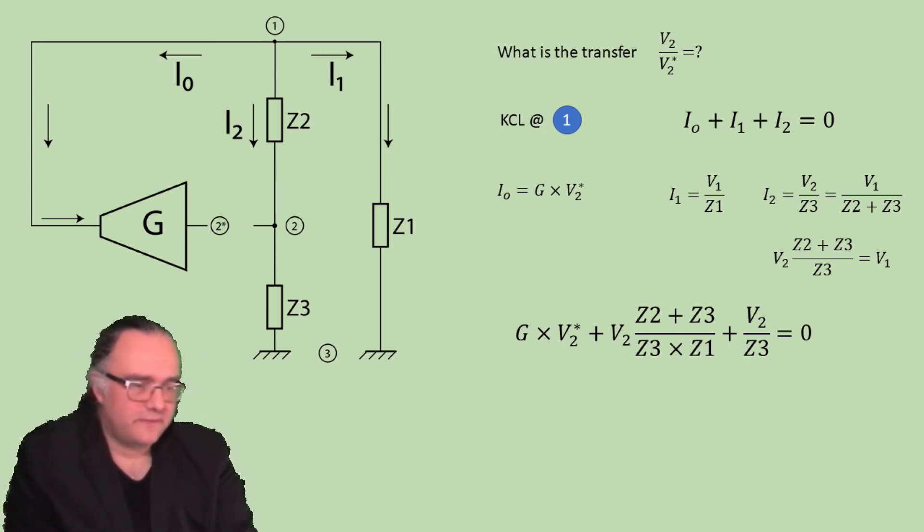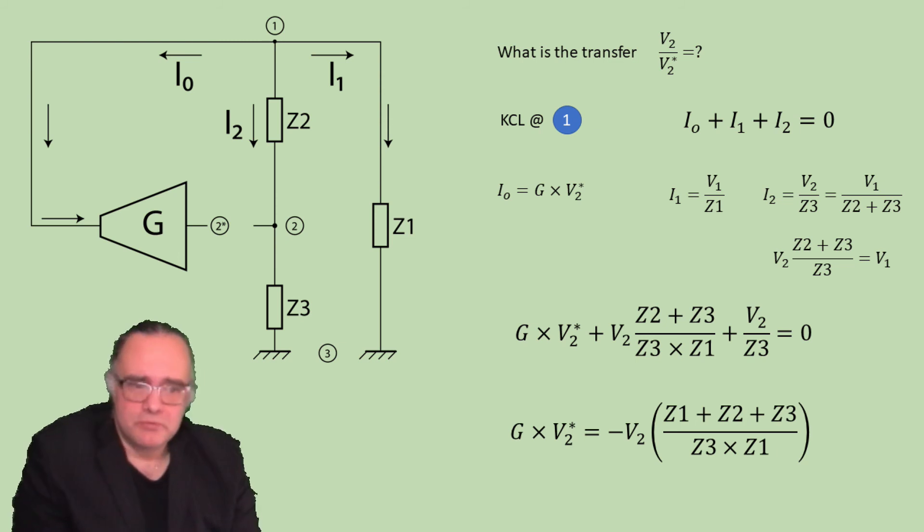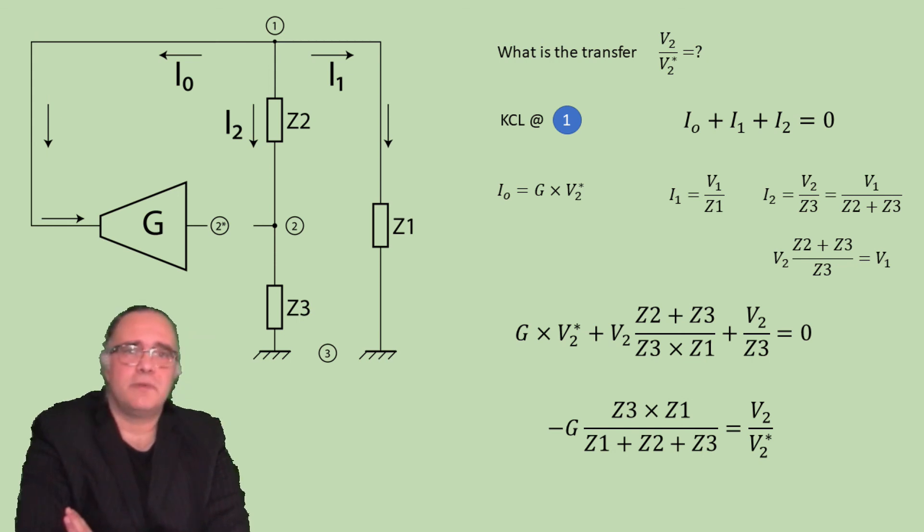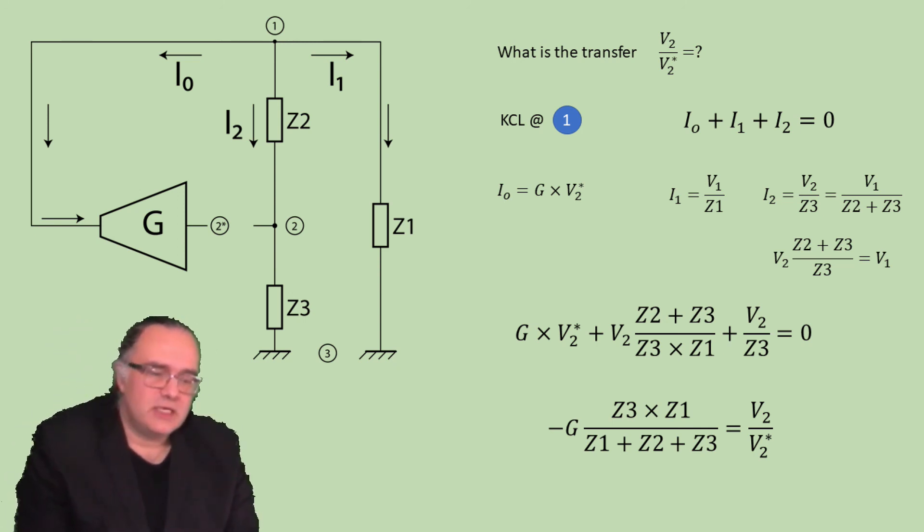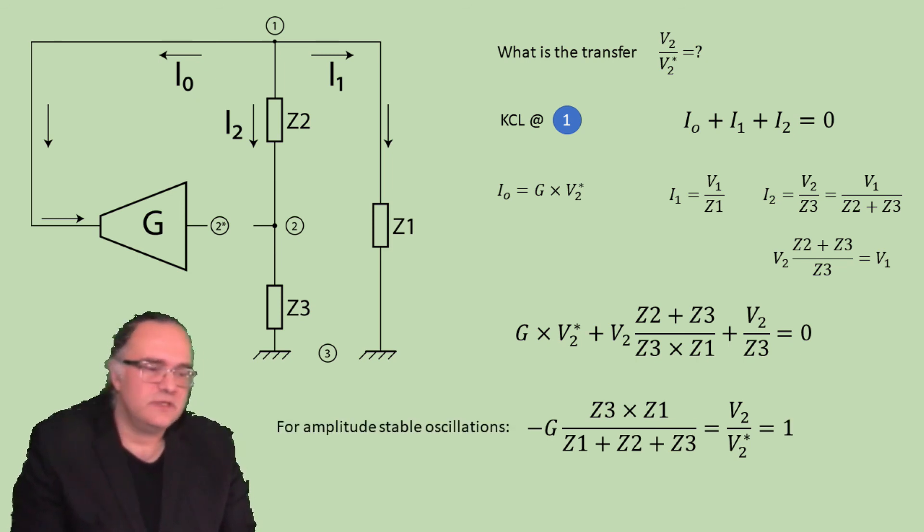A little bit of very simple algebra, rearrangement of the terms, and now you can express the transfer from V2 star to V2. So V2 divided by V2 star can be expressed as minus G times Z3 times Z1 divided by Z1 plus Z2 plus Z3. The Barkhausen criteria for oscillations require that for amplitude stable oscillations this expression, this transfer, is equal to 1.